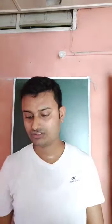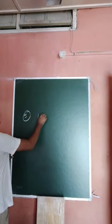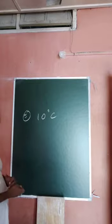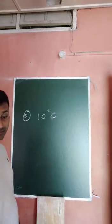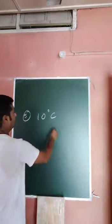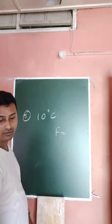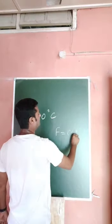Question number four: which thermometer should be used? It is a clinical thermometer — all of you know that. Now question number five: 10 degrees centigrade is equal to what? Whenever you convert centigrade to Fahrenheit, the formula is F = C × (9/5) + 32.